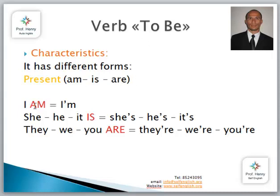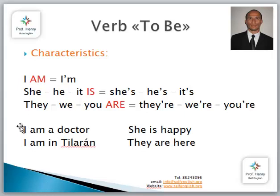Am is only for I — I am. Or it has a contraction: I'm. We use is for she, he, or it. So we say she is, he is, or it is. We also have contractions: she's, he's, or it's. And we use are for the plural pronouns — they, we, you. They are, we are, you are. Or we have contractions: they're, we're, you're. So we can say, for example, I am a doctor, or I'm a doctor. I am in Tilaran, or I'm in Tilaran.